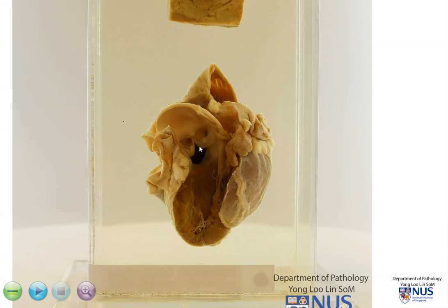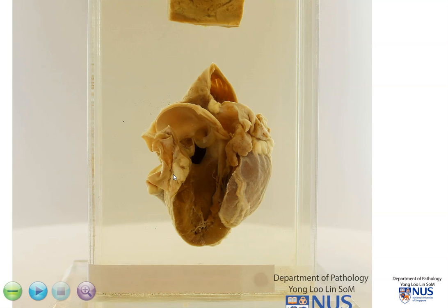Normally, if the VSD is an isolated abnormality, there will be shunting of the blood directly from the left to the right heart, and this is known as a left-to-right shunt. However, there are some instances in which there is a right-to-left shunt instead of the usual left-to-right shunting.